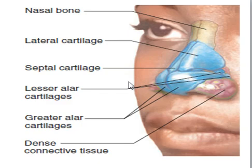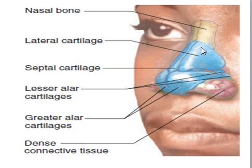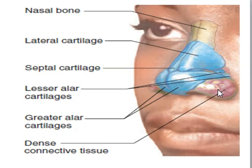The first part of the respiratory organ is the nose, which has very important functions: warming, cleaning, and humidifying inhaled air. The nose can also detect odors in the air stream and amplify the voice. The nose is composed of a framework of bone and cartilage. The bony part includes the nasal bone, while the cartilaginous part includes the lateral cartilage, septal cartilage, and the greater alar cartilage. There is also dense connective tissue, called the lanase.